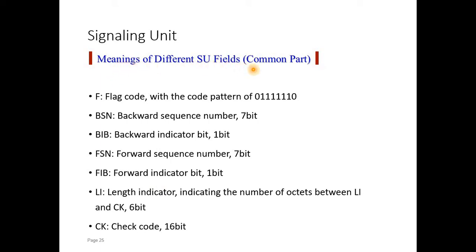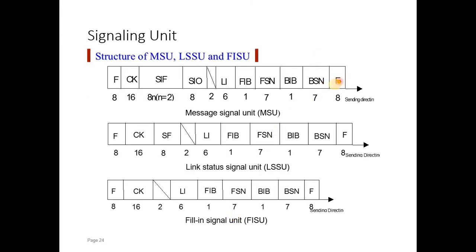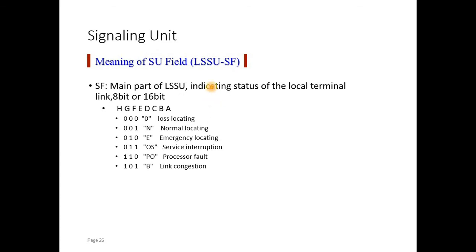Looking at the meanings of the different signaling unit fields which are common: F stands for flag code, BSN stands for backward sequence number, BIB stands for backward indicator bit, FSN stands for forward sequence number, FIB stands for forward indicator bit, L stands for length indicator, and CK is the check code. These common bits are present in all three kinds of message units.